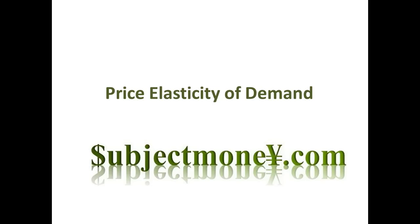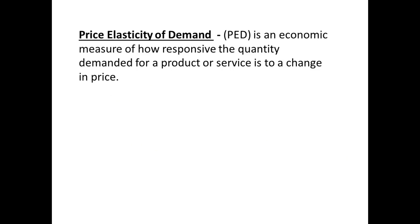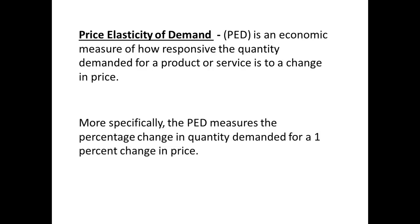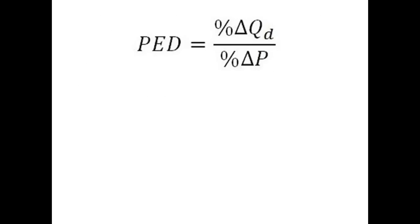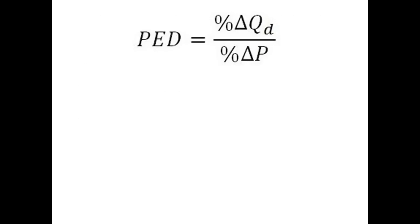The Price Elasticity of Demand, also known as the PED, is an economic measure of how responsive the quantity demanded for a product or service is to a change in price. More specifically, the PED measures the percentage change in quantity demanded for a 1% change in price. The formula for Price Elasticity of Demand is the percentage change in quantity demanded divided by the percentage change in price.